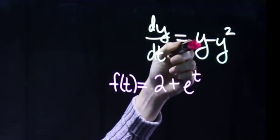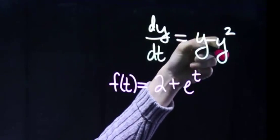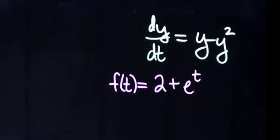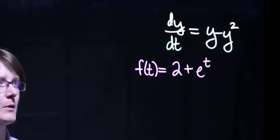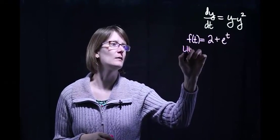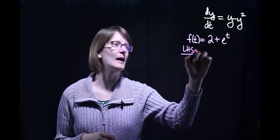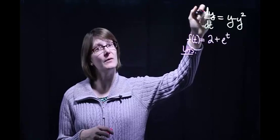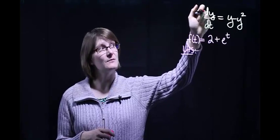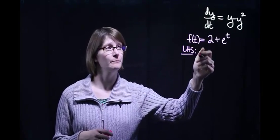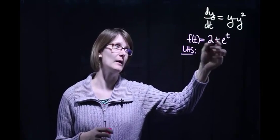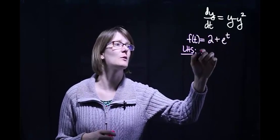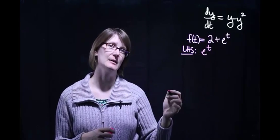Over here on the right-hand side we're going to have our function minus our function squared. There's really only just a little bit of calculus involved with these problems. So on the left-hand side, let's see what the derivative of this function is with respect to t. This is just a sum — the derivative of the two goes away, so our derivative is just e to the t.